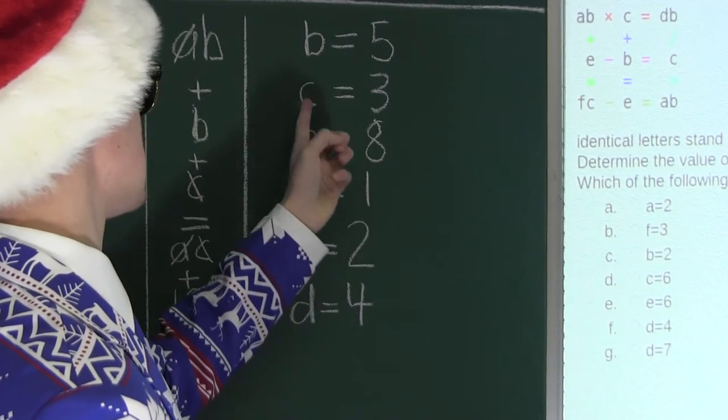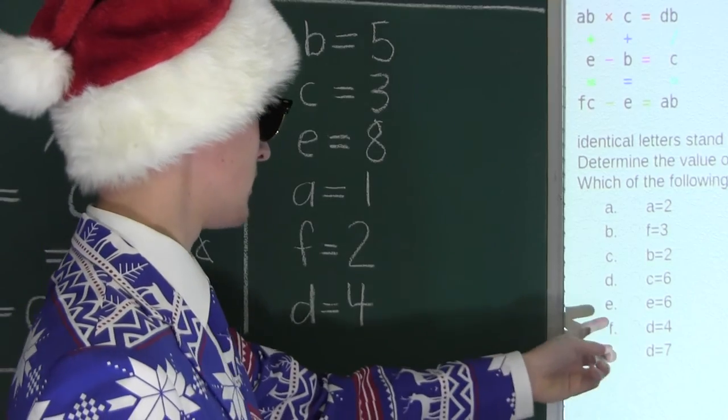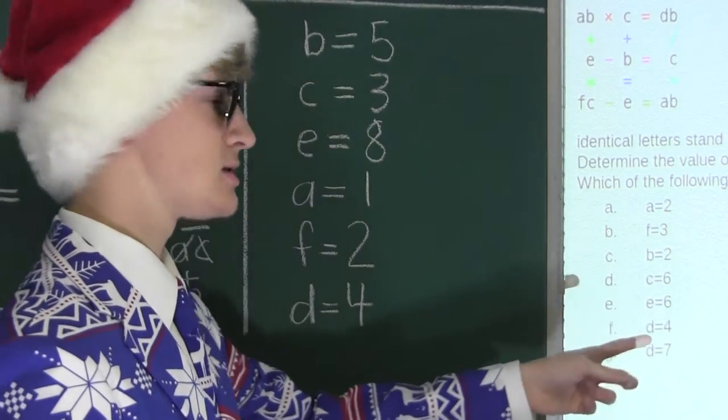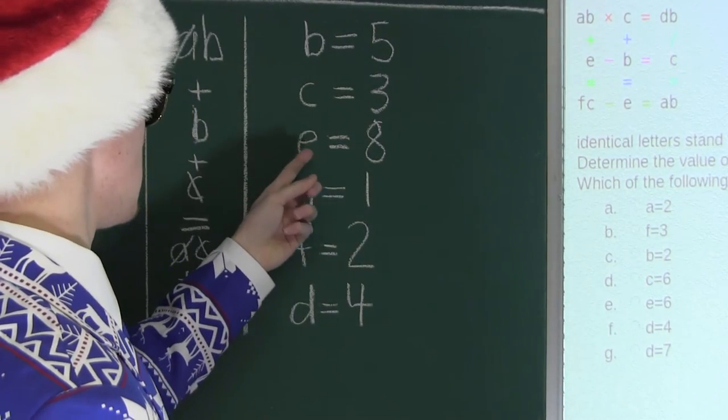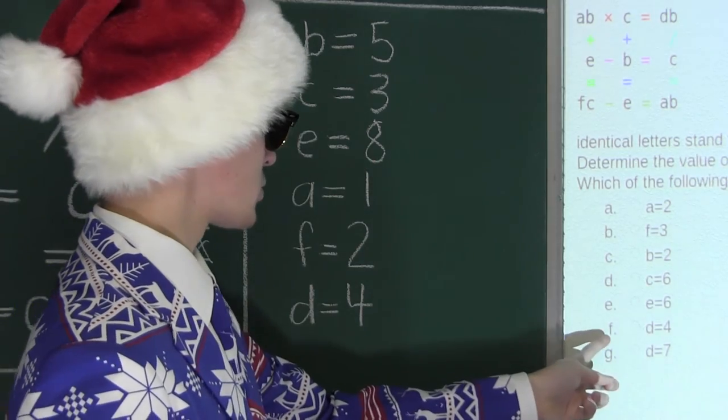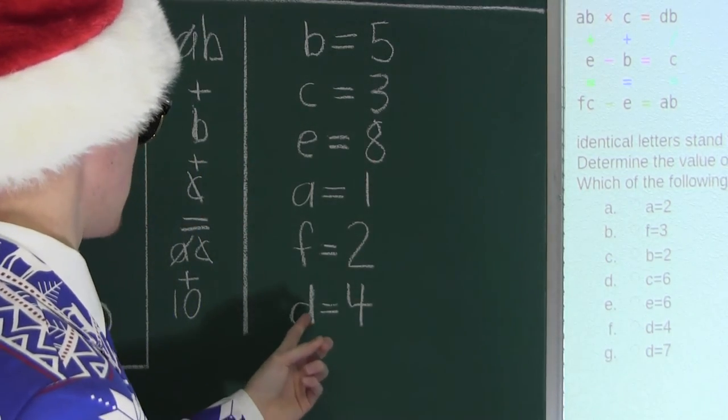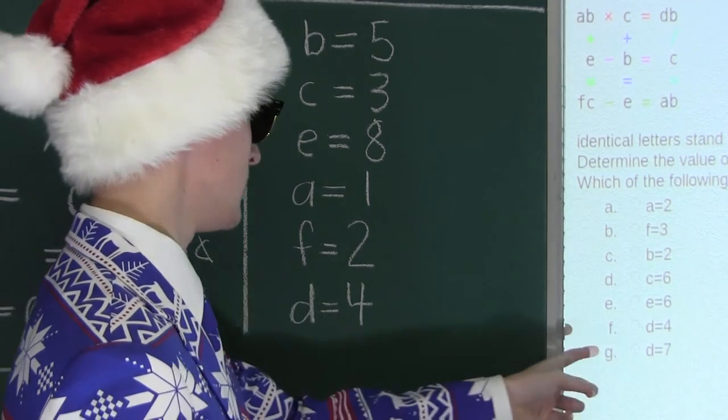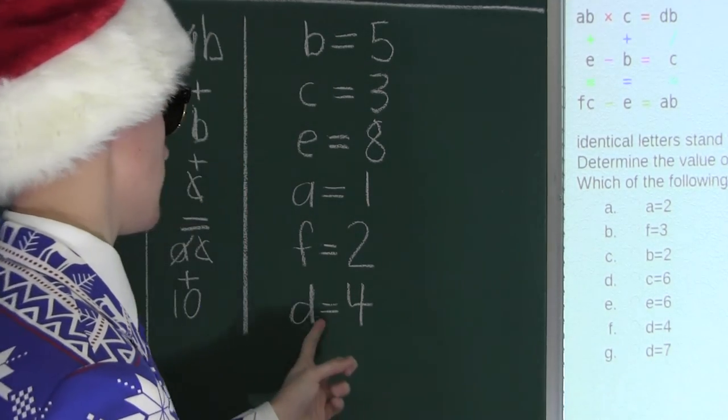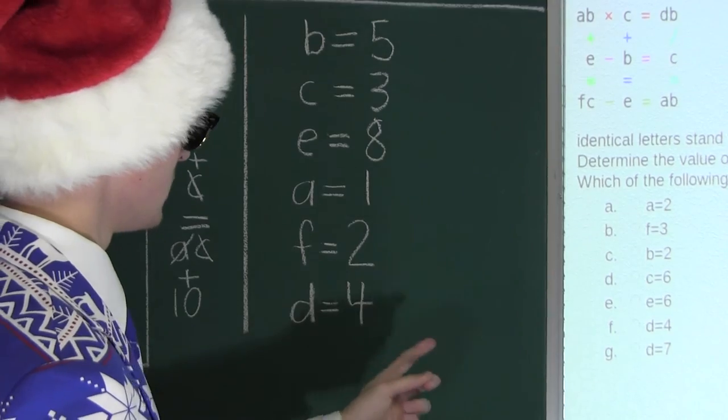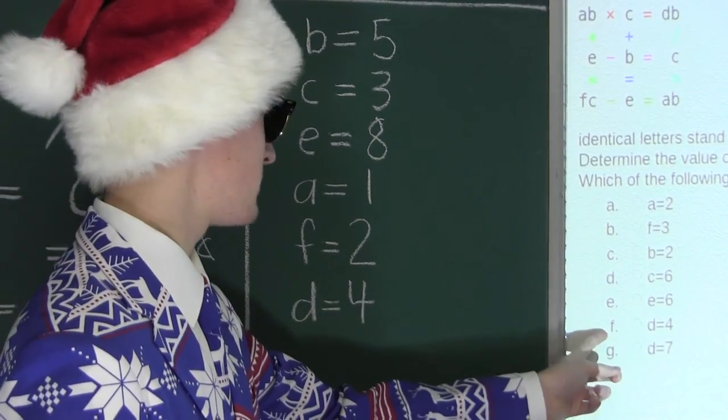Option E. E equals to six. No. We know E equals to eight. Then option F. D equals to four. Well, we know that's correct because D equals to four. And finally, option G. D equals seven. No. We know it's D equals four. So the correct option is F. D equals to four.